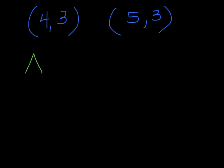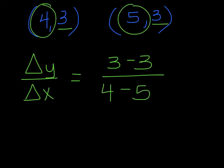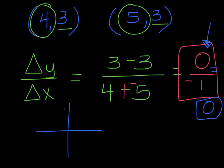Last one. Change in Y over change in X. This time my Y's are the same: 3 minus 3. My X's are 4 and 5, so I subtract those. On top, 3 minus 3 is 0. On the bottom, 4 minus 5 — adding the opposite — is negative 1. My slope is 0 over negative 1. Having 0 on the top is fine — 0 divided by any number is just 0. So this is a slope of 0, a horizontal line. Points 4 comma 3 and 5 comma 3 make a flat horizontal line — no slope, or slope of 0.